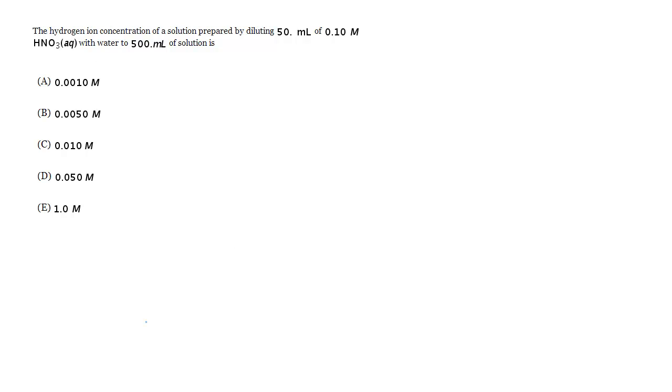Let me show you the easy way because you can pretty much use it almost always on these questions. So notice we're going from 50 mL of the solution and we're adding enough water to make it go to 500. So this is a 10x dilution, right? We're increasing the volume of the solution by 10 times and we're not changing the number of moles of H plus in it.